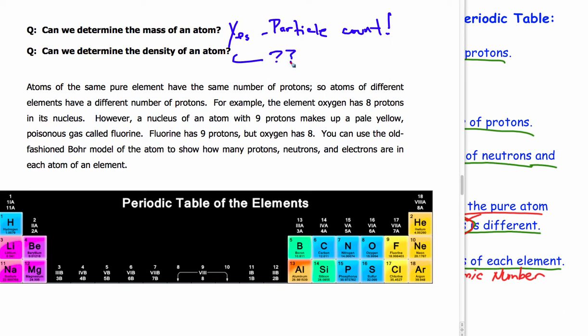And can we determine the density of an atom? We can just say the jury is out on that still. But we can say that the density of the substance, the density of an element, will be determined by the atomic mass, which is the particle count.